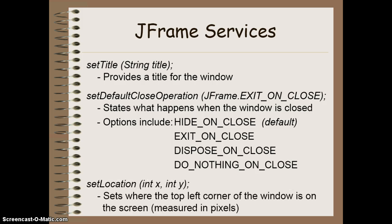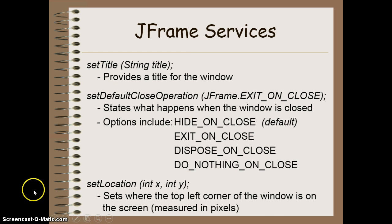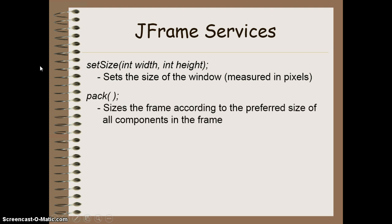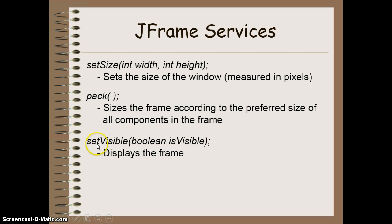There's a setLocation method where you provide two values, X and Y — X being horizontal and Y being vertical — which sets where the top left-hand corner of the window will be on your screen when it runs. We've also got setSize, which takes two integers for width and height to specify how big your window will be. There's a method called pack, which sets the size of the frame based on how big each component inside it is. Finally, setVisible allows the frame to be either true (visible) or false (not visible) — the default is false.